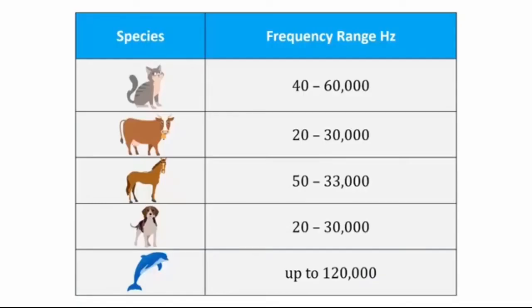The table shows the audible frequency range of some animals. According to this table, a cow can hear a frequency range of 20 to 30,000 hertz. A dolphin can hear a frequency range of up to 1,20,000 hertz.